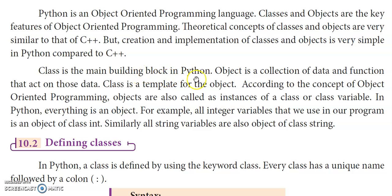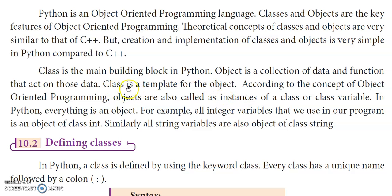A class is the main building block in Python. It is a blueprint. Objects are a collection of data and functions that act on that data. The class is a template for objects — we can create a template, like a blueprint from which we can create Xerox copies. From the blueprint we apply a basic template and create new objects. We call objects as instances of a class.